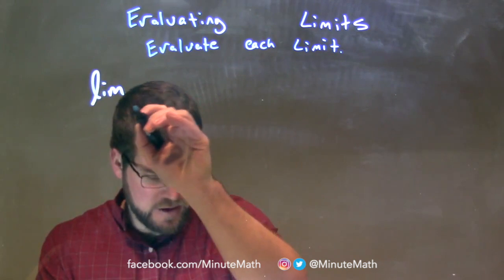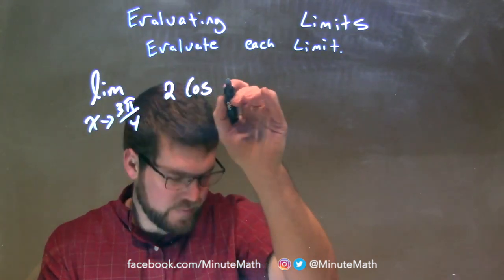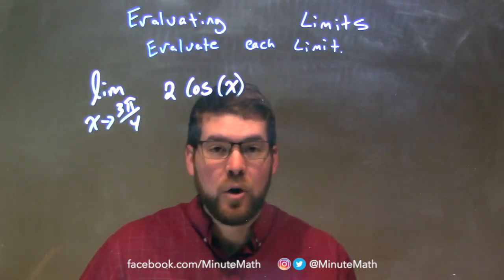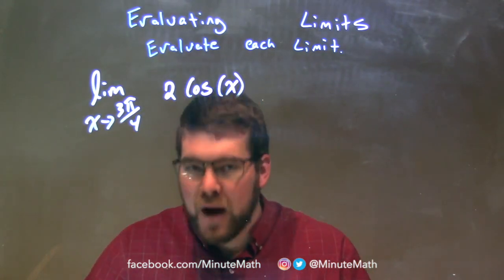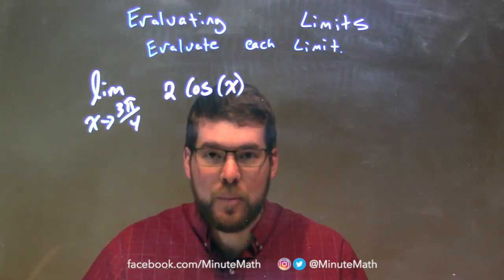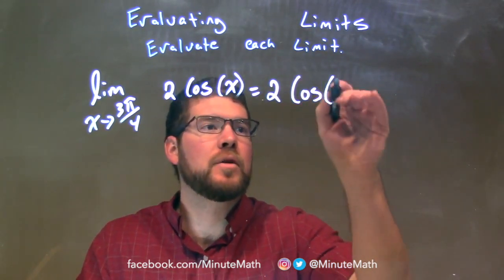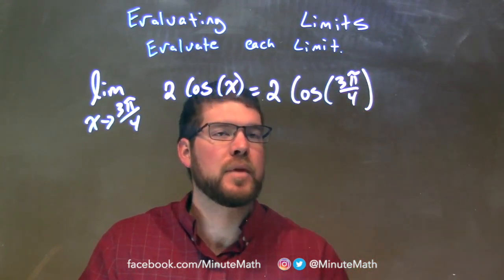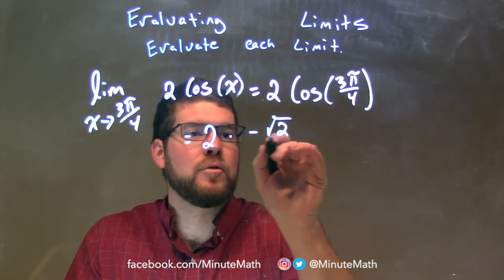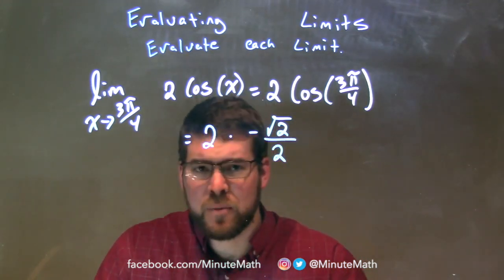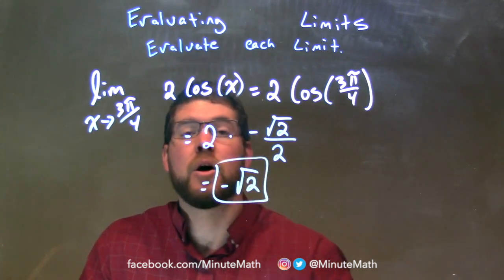The limit as x approaches 3 pi over 4 of 2 cosine of x. Cosine is a trig function, so we can plug 3 pi over 4 directly in for x. We have 2 times the cosine of 3 pi over 4. The cosine of 3 pi over 4 is negative square root of 2 over 2. The 2s cancel, leaving us negative square root of 2, which is our final answer.